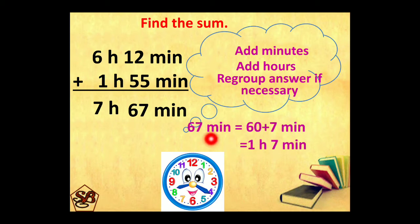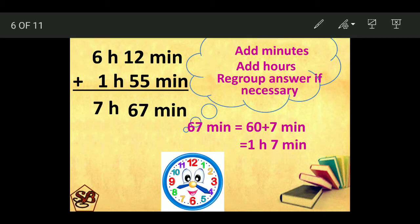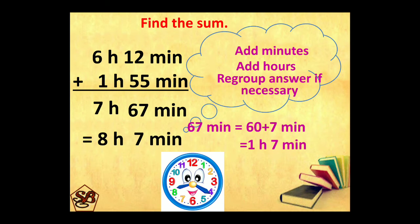Regrouping 67 minutes can be written as 60 plus 7 minutes. 60 minutes makes 1 hour. So this can be written as 1 hour 7 minutes. This 1 hour will be added to these hours. That is 7 plus 1, 8 hours. So our final answer will be 8 hours 7 minutes.